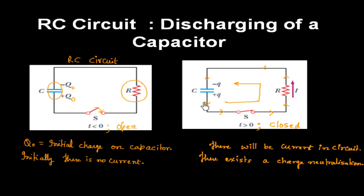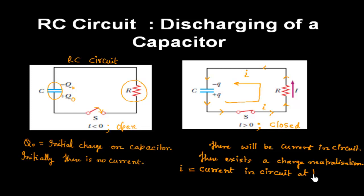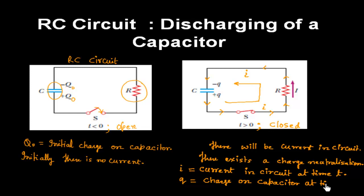At any time, this circuit has a current of I. So I is the current in the circuit at any time T. And Q is the charge on the capacitor at any time T. My task is to find what is the charge and what is the current in the circuit at any time T. To solve this problem, we can apply Kirchhoff's law in this circuit and solve the following equation.